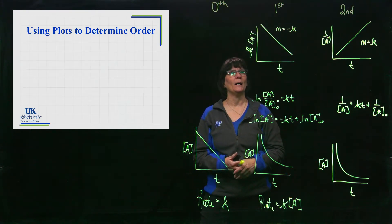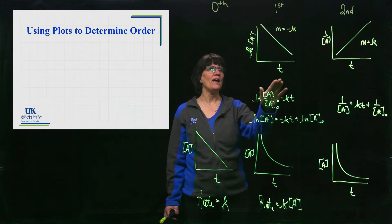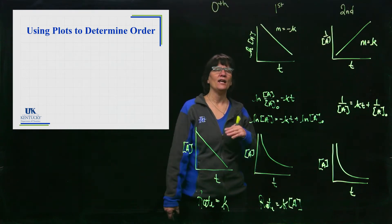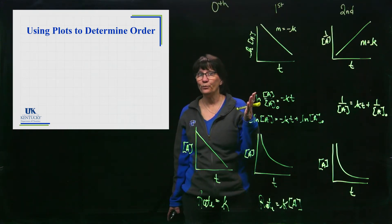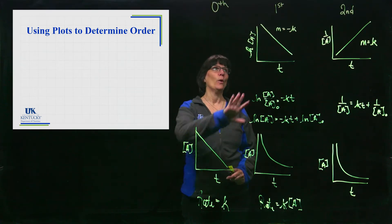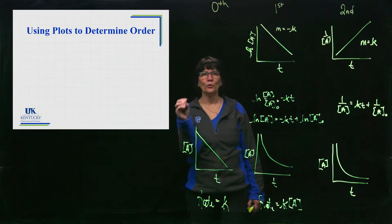If we say all right, a plot of natural log of [A] versus t gave a straight line, the slope of that line is negative 31 per second as its units, and we say what's the k? Well, you know the k is the opposite of its slope, so you'll be able to pull this information if we hand it to you on a silver platter.